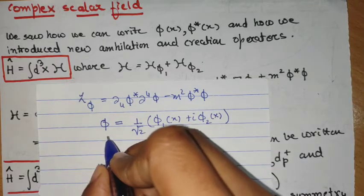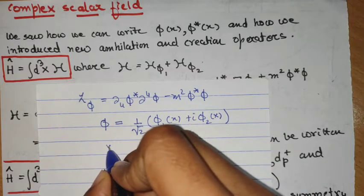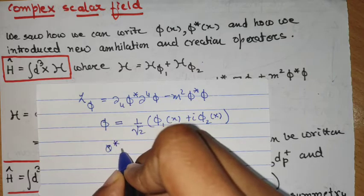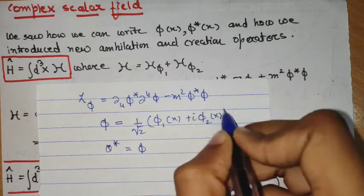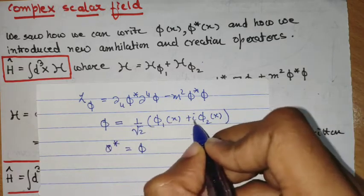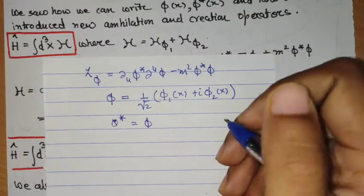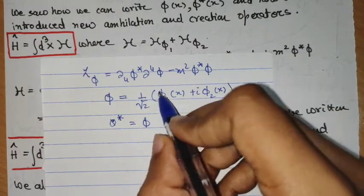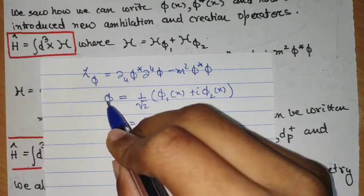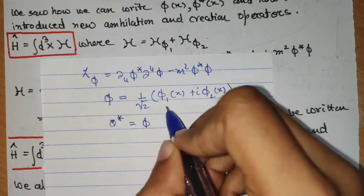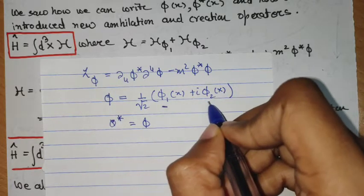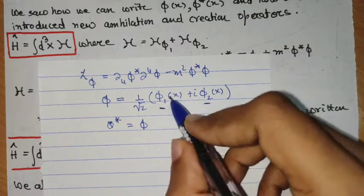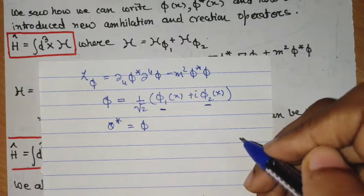This decomposition — and phi star, the conjugate of this field, will give a minus sign — helped us to represent a complex Klein-Gordon field in terms of two real scalar Klein-Gordon fields, phi 1 and phi 2.